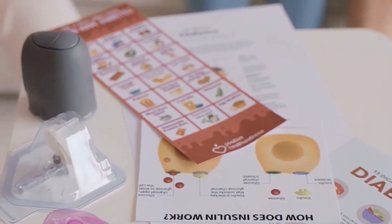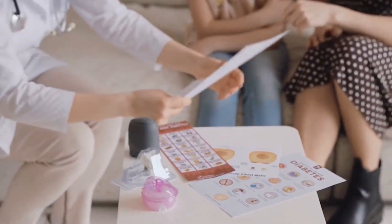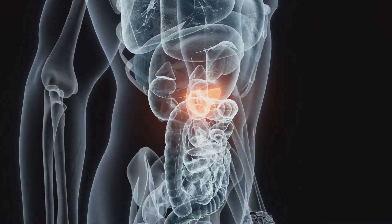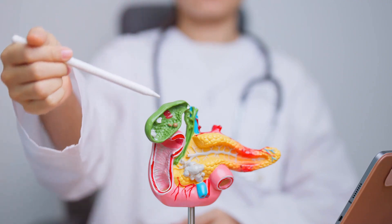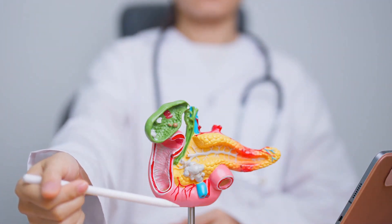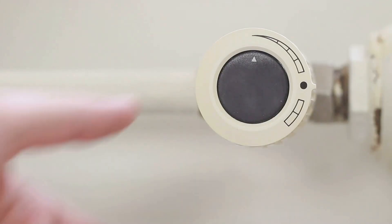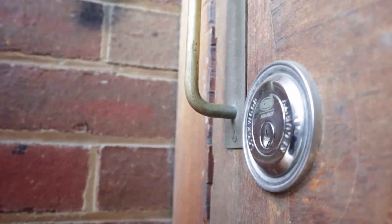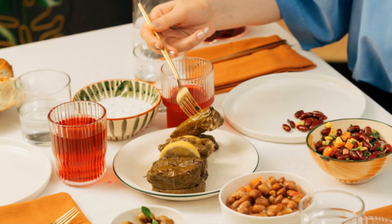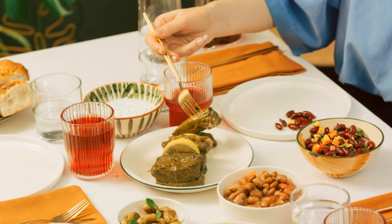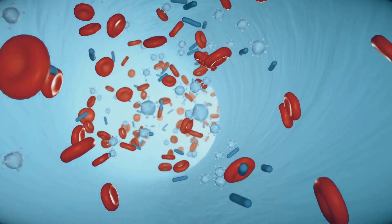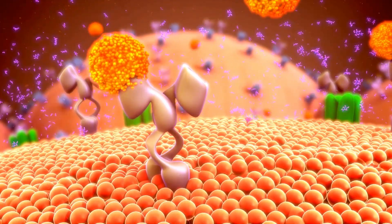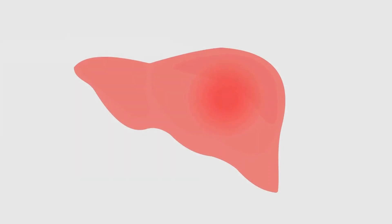To maintain this delicate balance, our bodies have evolved a sophisticated system of hormonal control, primarily regulated by the pancreas. This small but mighty organ secretes hormones that act like messengers, telling the body whether to store or release glucose. The pancreas produces two key hormones: insulin and glucagon. Insulin unlocks cell doors, allowing glucose to enter for energy — after a meal, the pancreas releases insulin, signalling cells to absorb glucose and lowering blood sugar levels. Glucagon acts like a backup generator when blood sugar is low, signalling the liver to break down glycogen into glucose, raising blood sugar levels and ensuring a steady glucose supply.